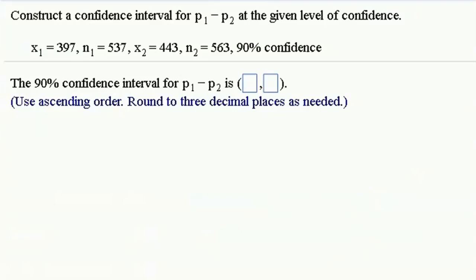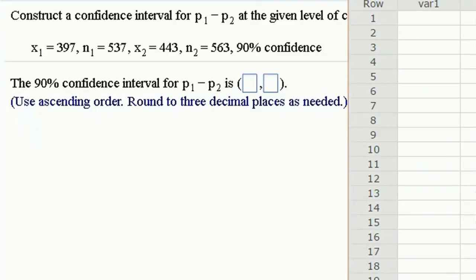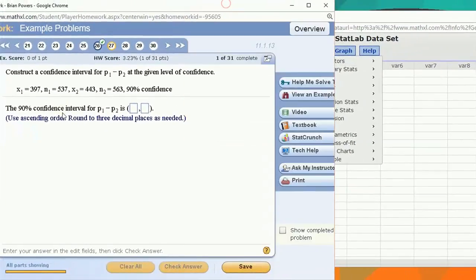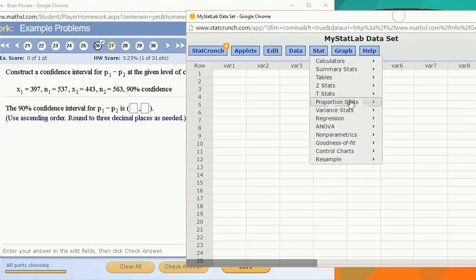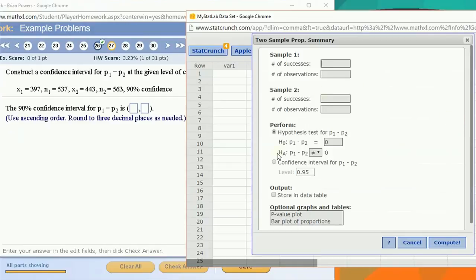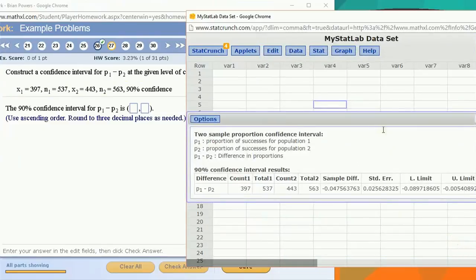Let's see what a confidence interval would be. I'm going to close that and find the confidence interval for a difference of two proportions. It's again under proportion stats, two sample with summary, but this time I'm going to click confidence interval for P1 minus P2. I'll set the confidence level at 0.90, and let's enter this data. So we are told 397 successes, 537, that's the first sample size, and then 443 and 563.